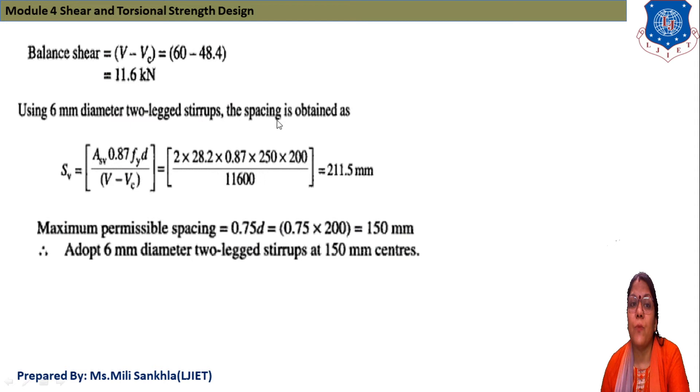Now using 6 mm diameter 2-legged stirrups, spacing is obtained: S = (0.87·fy·Asv·d)/(V - Vc). That's 2 × 28.2 × 0.87 × 415 × 200, and after that we find spacing is 211.5 mm.